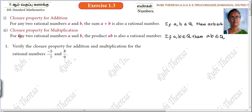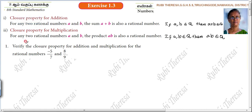Kanan is in here. This is Ruby Teresa. Exercise 1.3, First problem: Verify the closure property for addition and multiplication for the rational numbers minus 5 by 7 and 8 by 9.